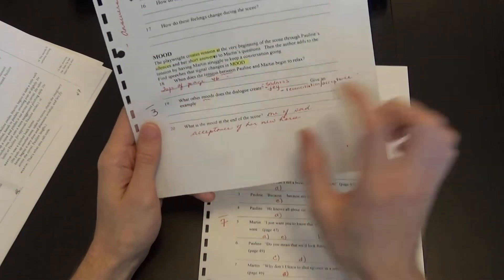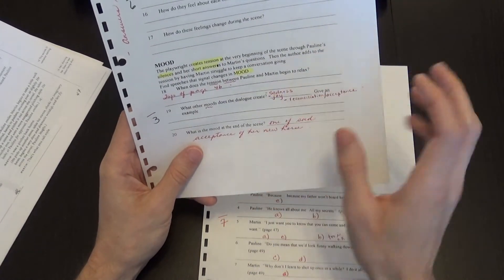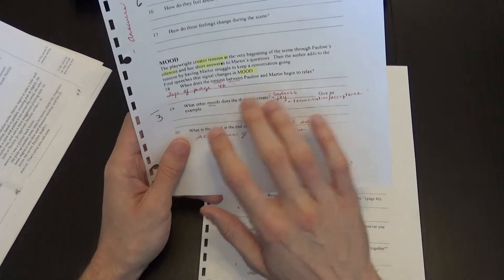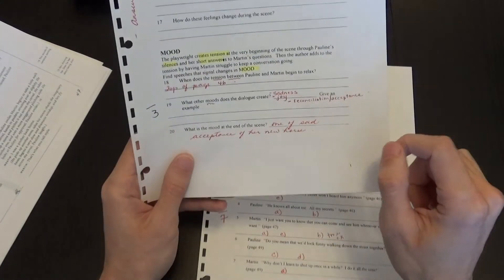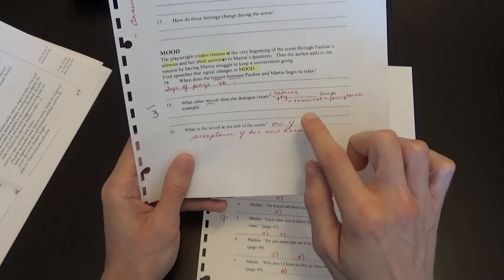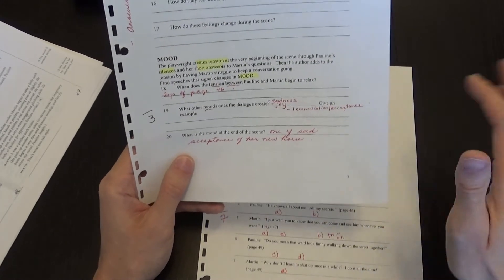And then question 19, what other moods does dialogue create? So some sadness, some joy, reconciliation, acceptance there. Again, there are many different answers here. And question 20, she needs to accept that she's going to get a new horse and that her horse is leaving. So it's a mood of sadness.